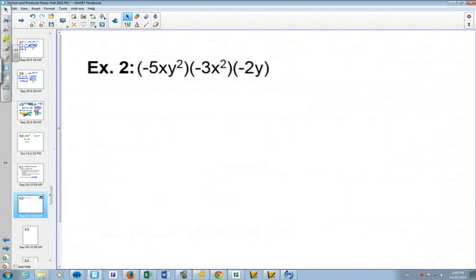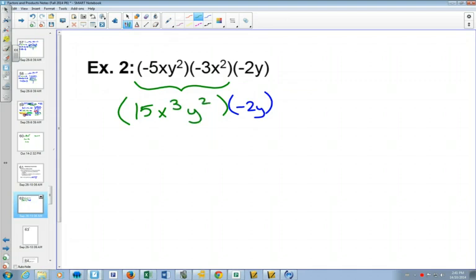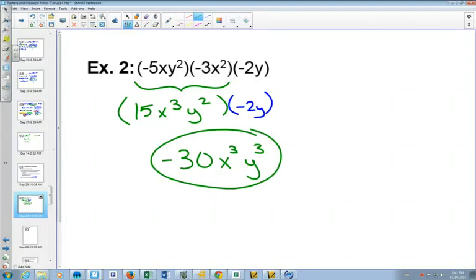One for you to try. When multiplying three things, multiply two of them first. So multiply those two first, keep the minus 2y there. All right. Did you get 15x cubed y squared to start? Yes. And then when you multiplied one more time, you would get negative 30x cubed y cubed. Is this it? That's all you have to do? That's all you have to do. Multiplying is easy.